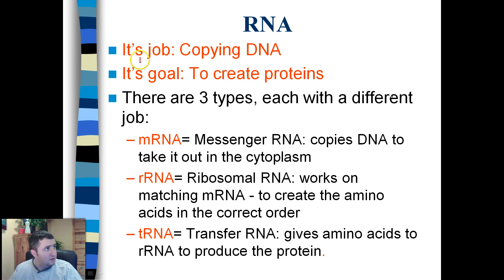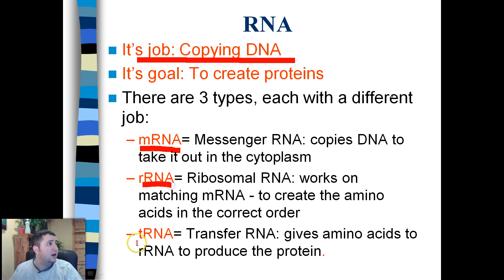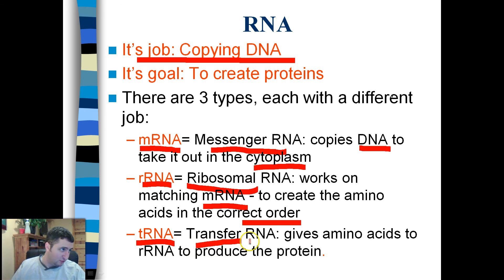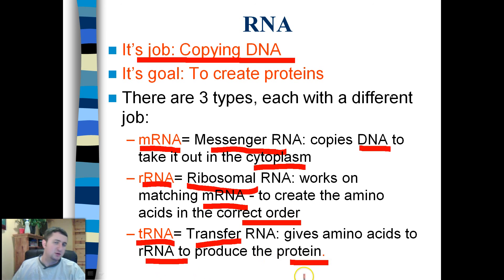The job of RNA is to copy DNA with the goal of eventually creating proteins. There are three types of RNA: mRNA, rRNA, and tRNA. mRNA, or messenger RNA, copies DNA and sends it to the cytoplasm. rRNA, or ribosomal RNA, matches the mRNA to create amino acids in the correct order. tRNA, or transfer RNA, supplies amino acids to rRNA to produce protein — it acts as the carrier for any amino acid needed.